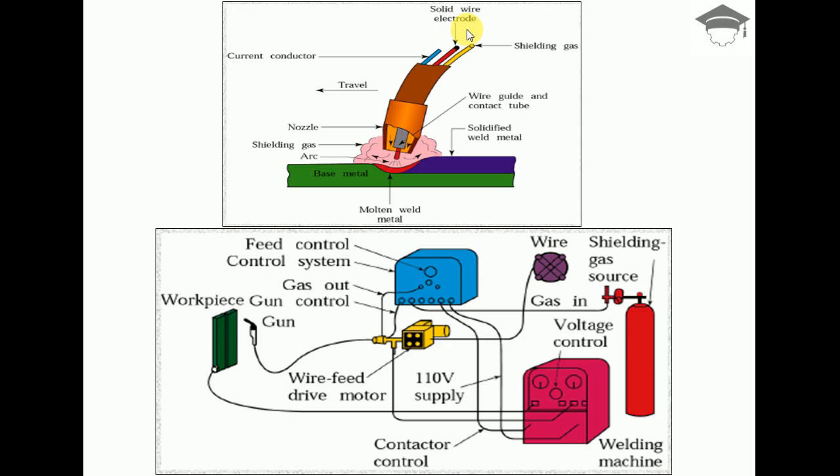This wire is being fed using a wire feed drive motor. The wire is rolled in the form of a loop and is periodically supplied through this wire feed drive motor.